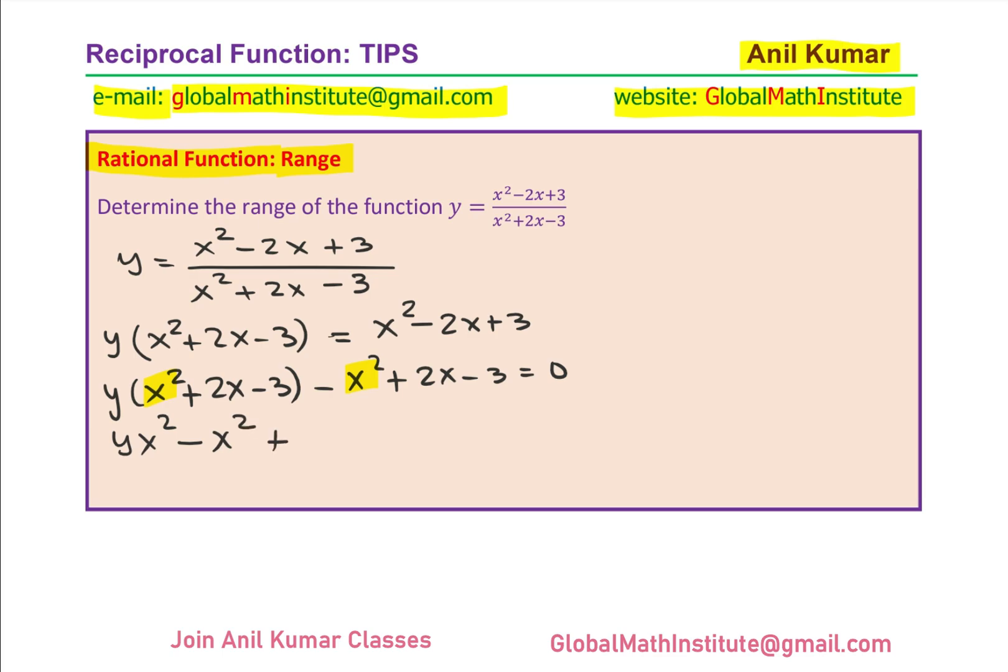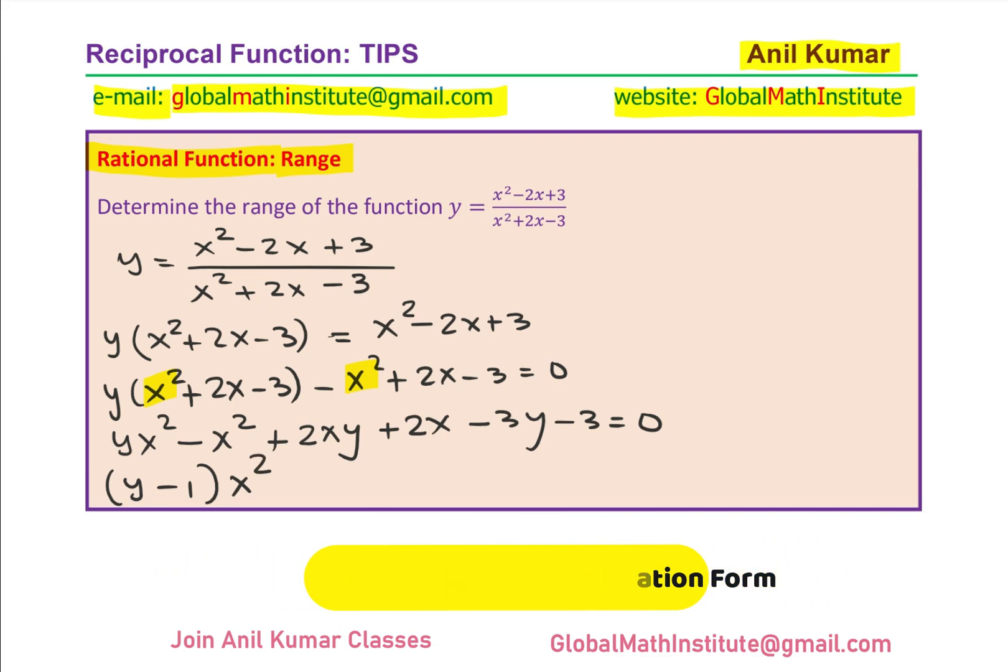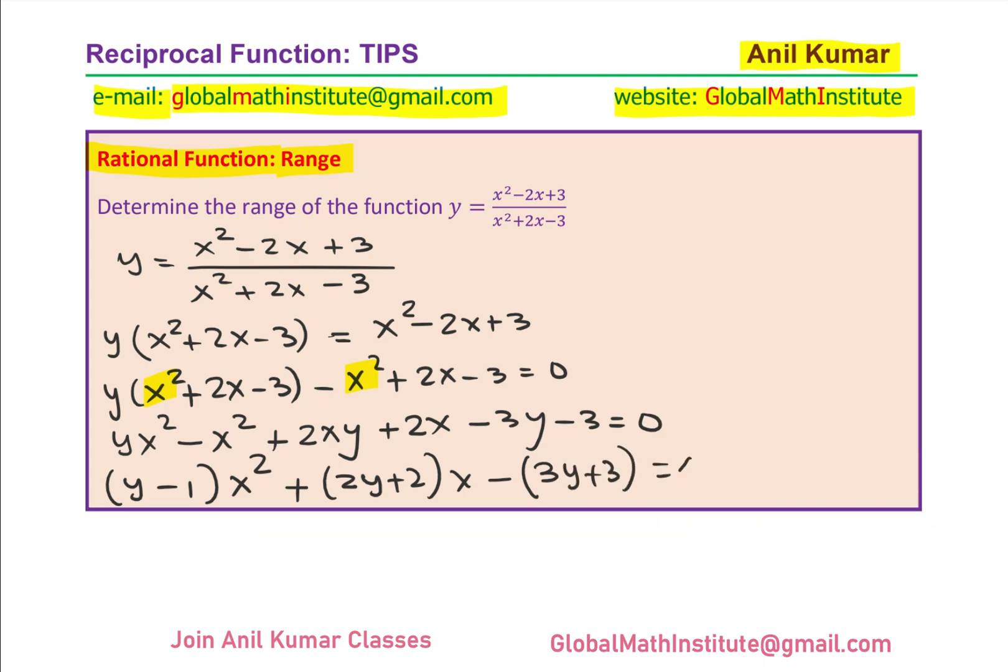Plus 2x times y and here we have plus 2x. Then we have minus 3y and here we have minus 3 equals to 0. Now you see, we could actually rewrite this as a quadratic equation with coefficients involving y. So if I take x square common, I get y minus 1 times x square. Here we can take x common, so we have 2y plus 2 with x common and in this case, we can take minus, we have minus 3y plus 3 equals to 0.